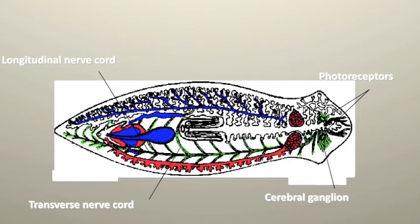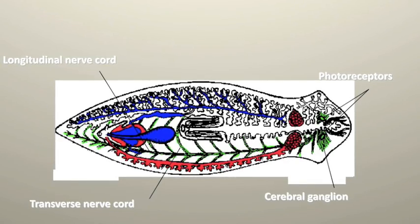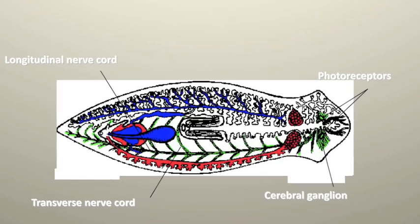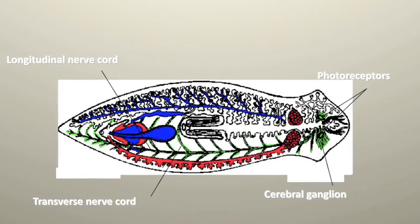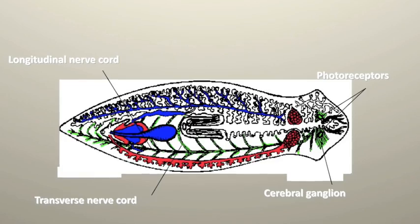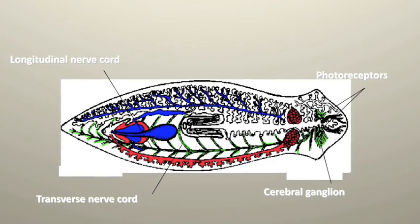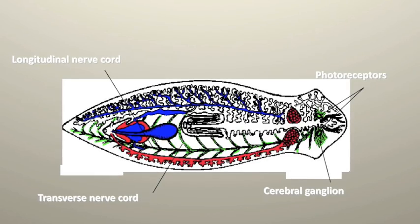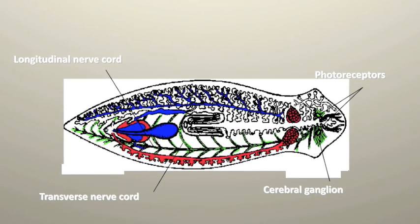Flatworms also have cephalization. This term means that the anterior, or front end of the organism, has nerve ganglia. These ganglia are attached to longitudinal nerve cords. Eye spots and photoreceptors sense light, and they are shown in the green part on the diagram.